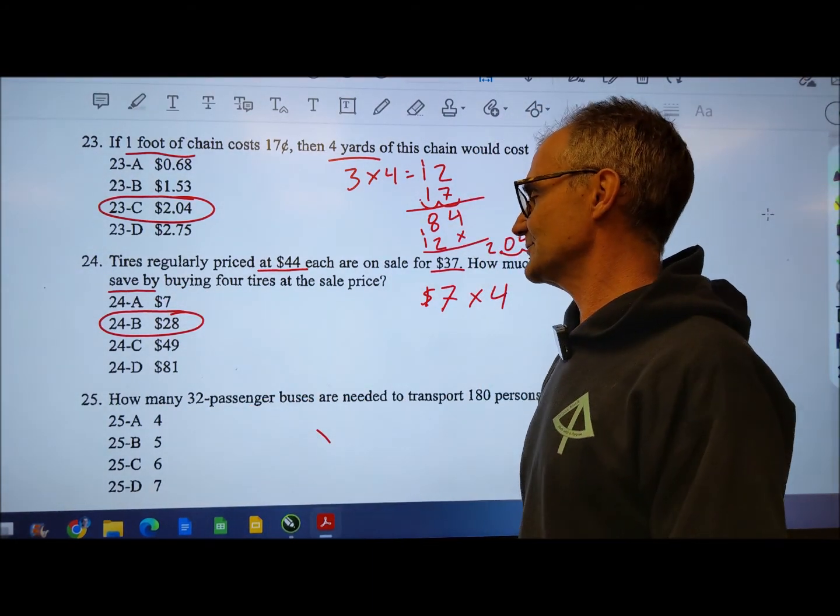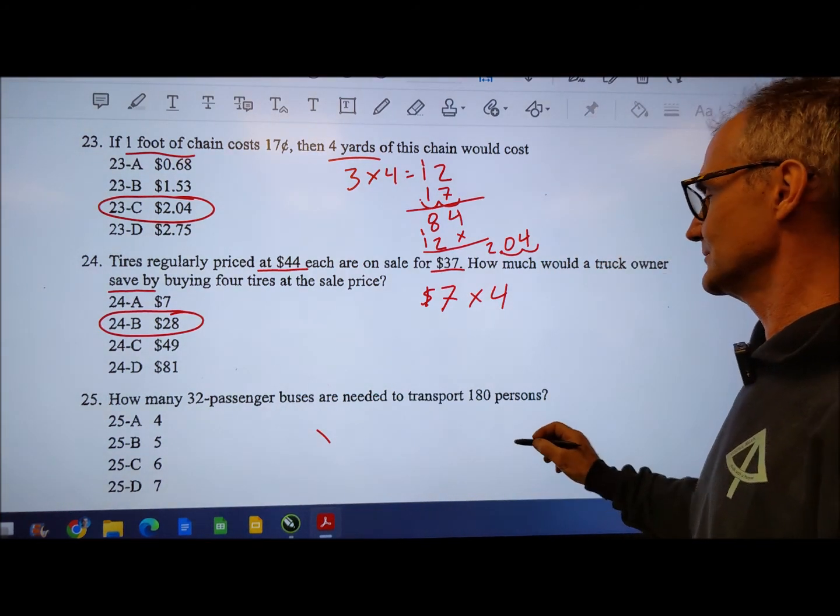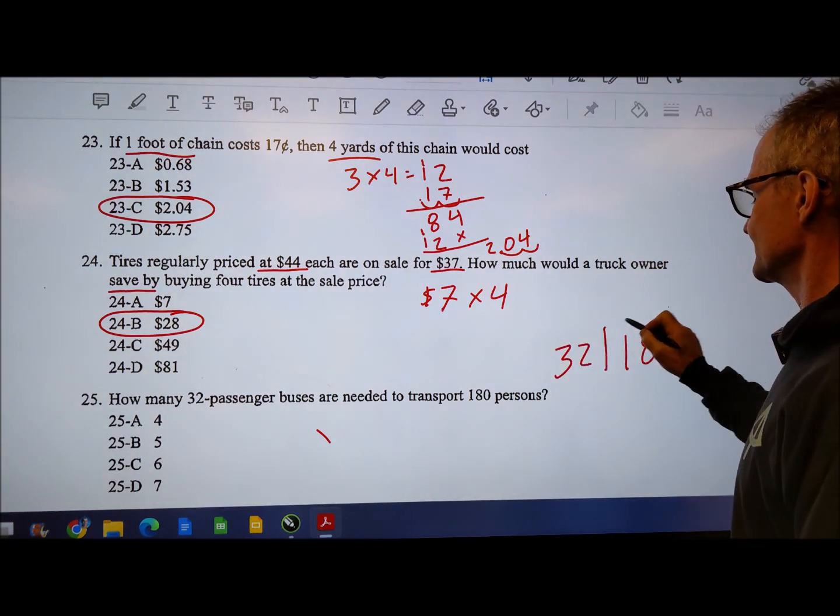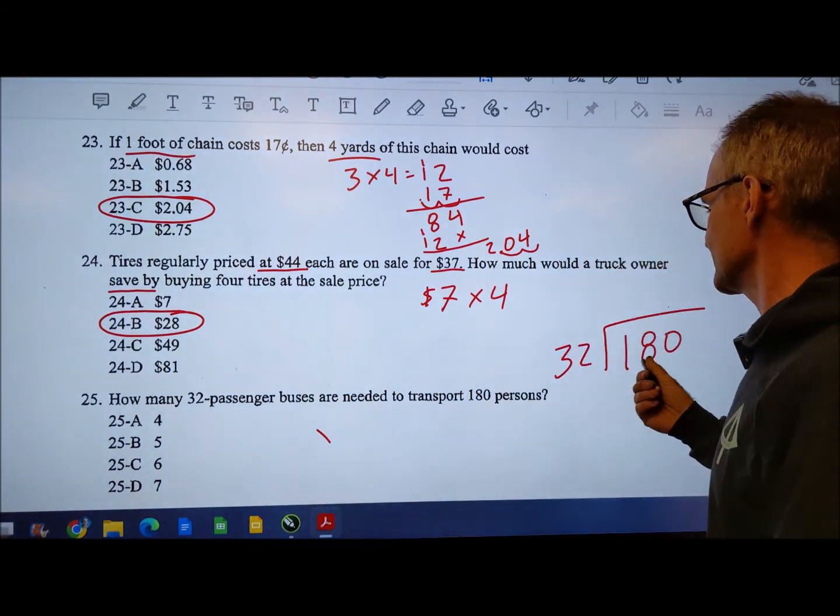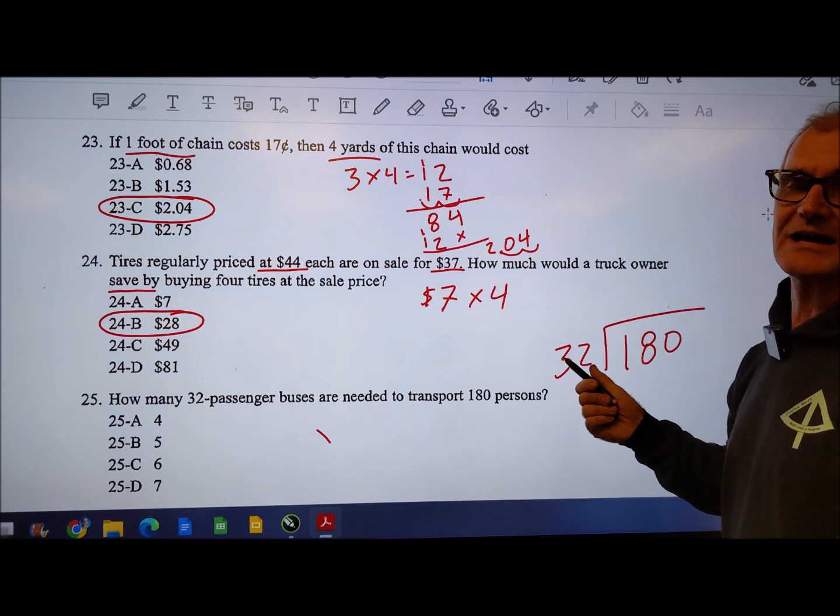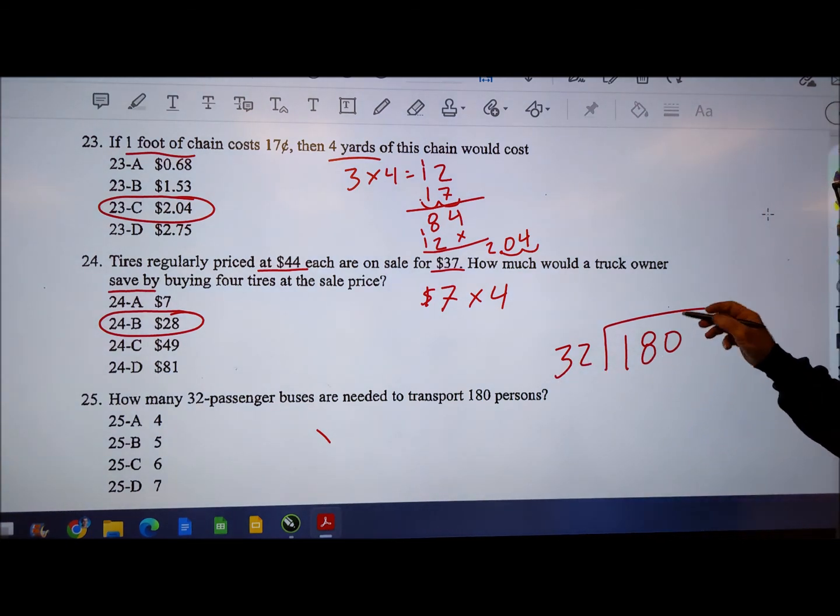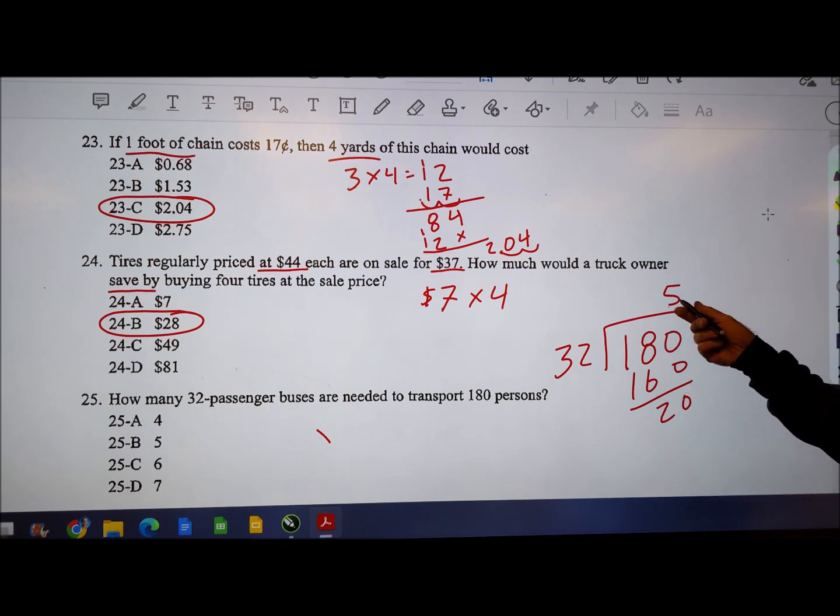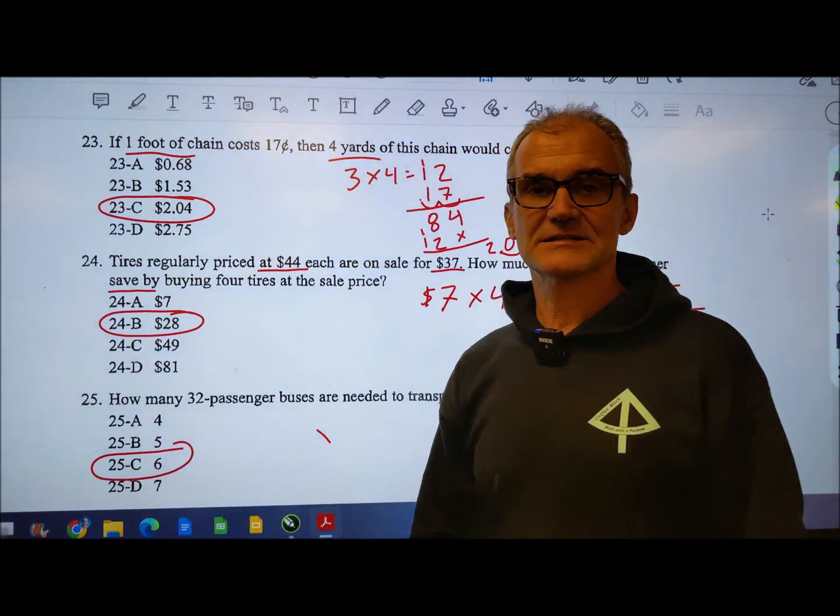Number 25, how many 32 passenger buses are needed to transport 180 people? So we have 180 people and before I even do this problem I kind of see the trick in it and the fact that 32 is not going to go into 180 so I'm going to have to round up. So 32 goes into 180 five times. That's going to give me 160 with 20 left over. That doesn't really matter. I'm going to need more than five buses and I'm just going to get one bus more to get six total buses.